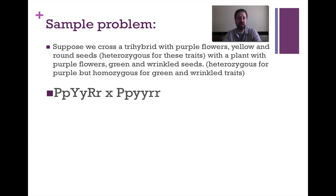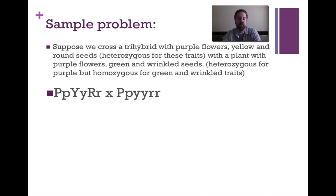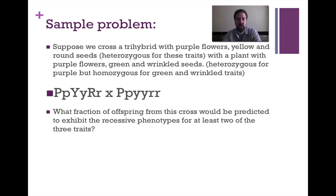So essentially we have PpYyRr crossing with PpyyRR — wait, Ppyyrr. The question we're going to answer is: what fraction of offspring from this cross would be predicted to exhibit the recessive phenotypes for at least two out of the three traits? It sounds very complicated, but we can work through it slowly and simply by looking for phenotypes that have at least two of the three traits being homozygous recessive.